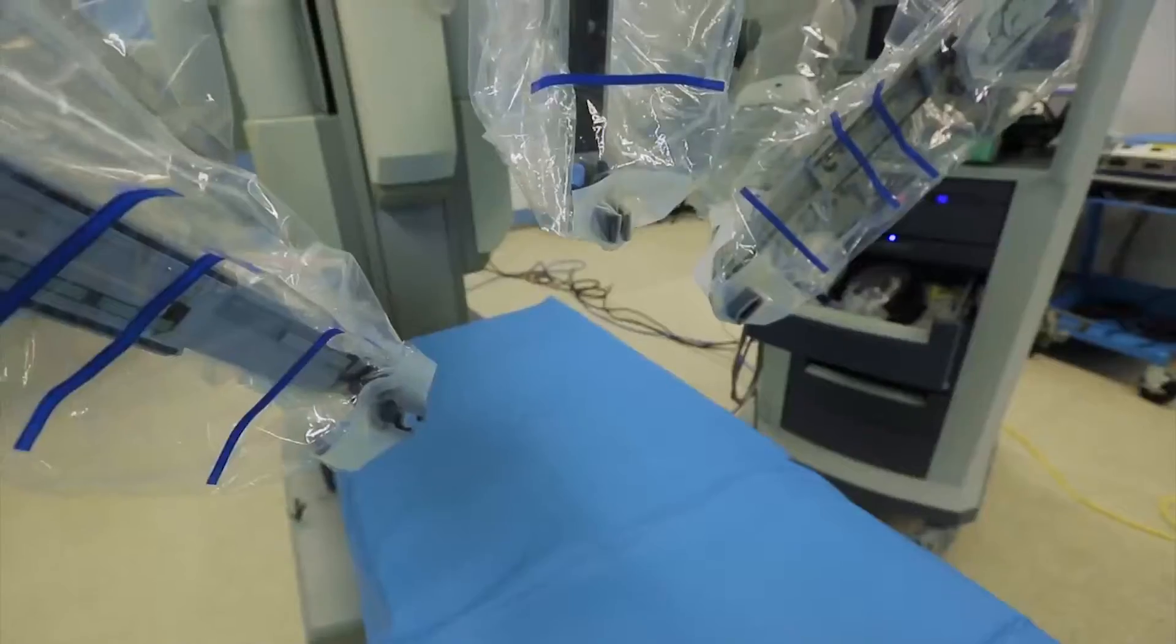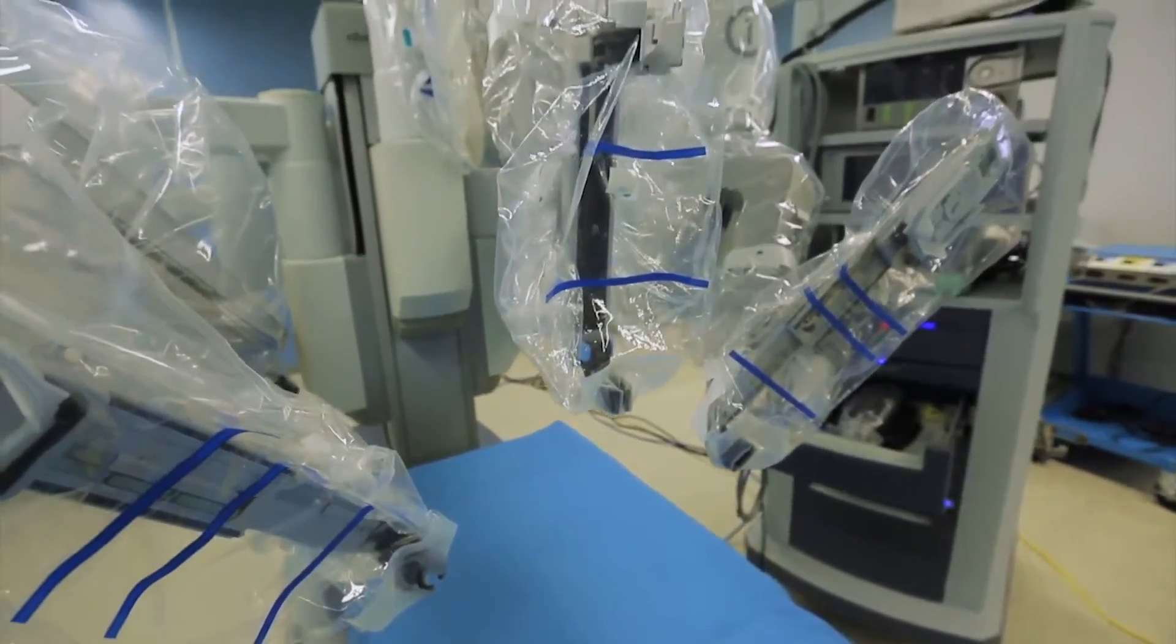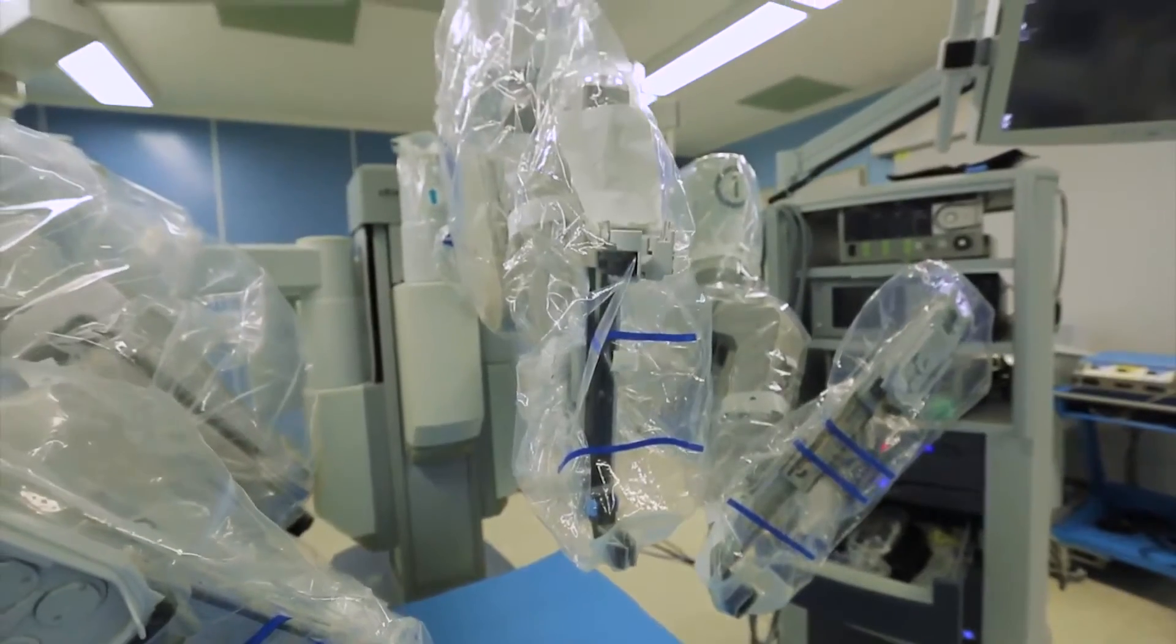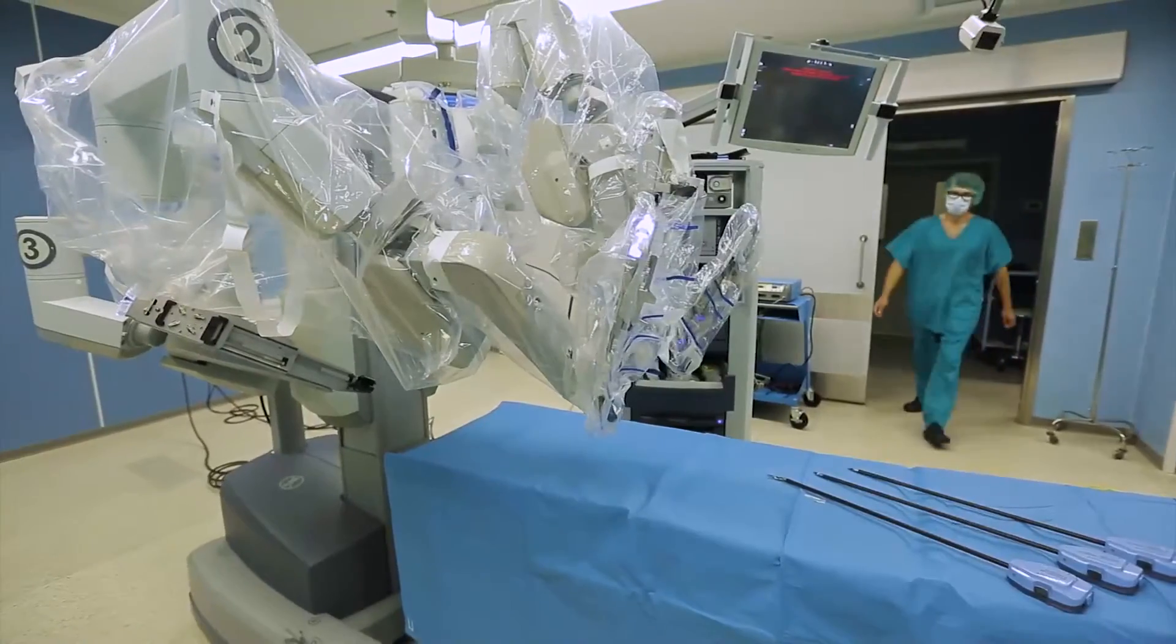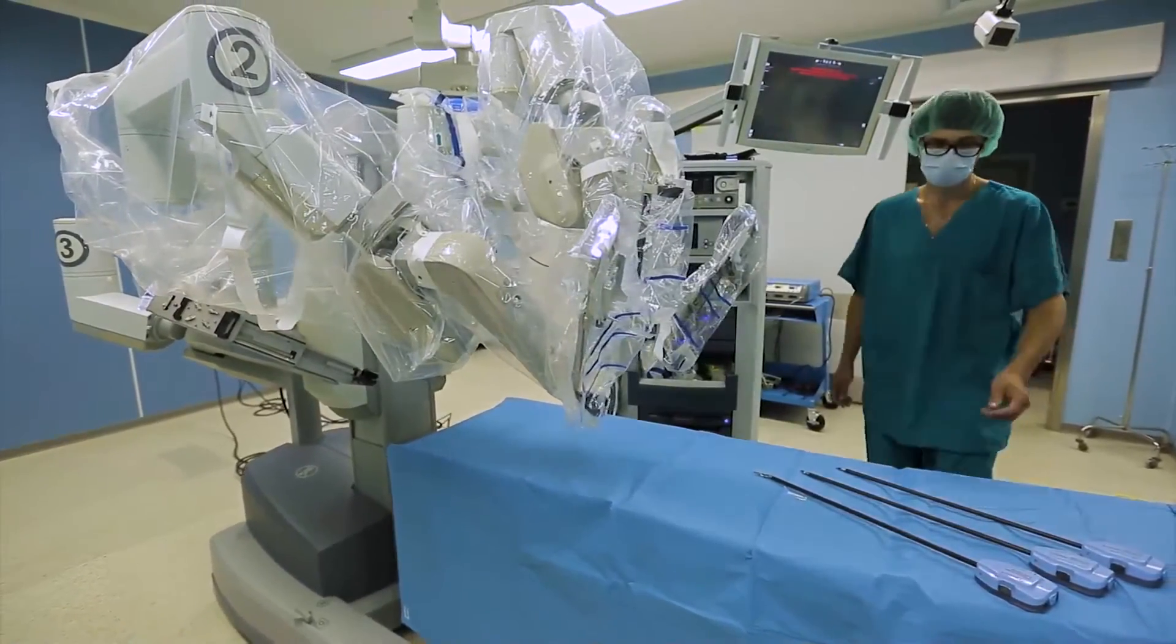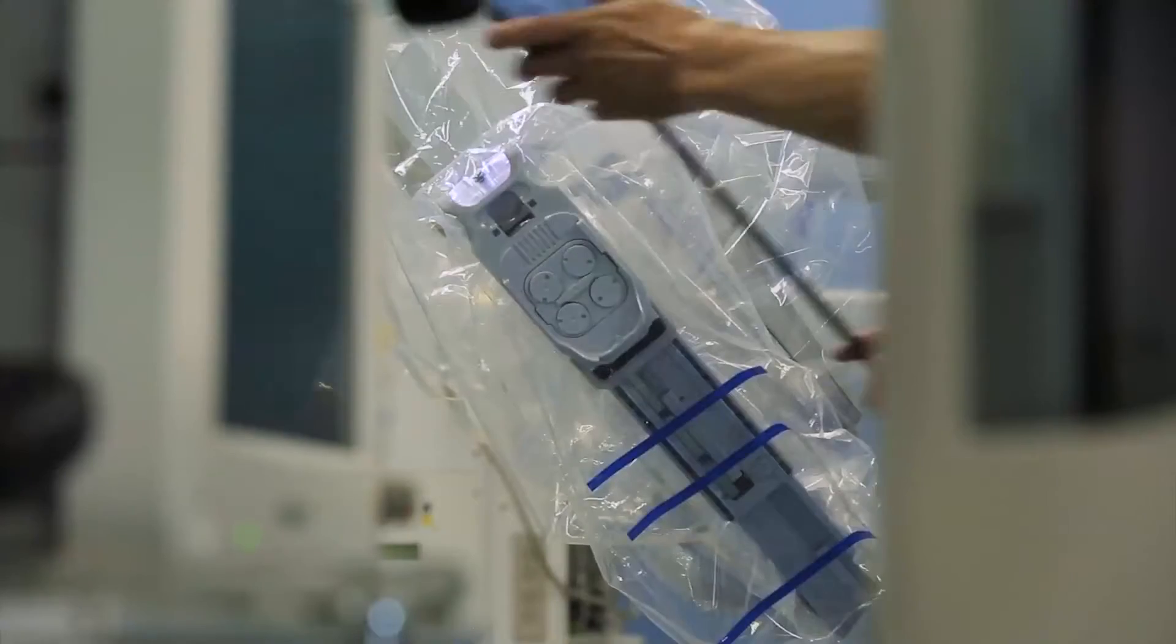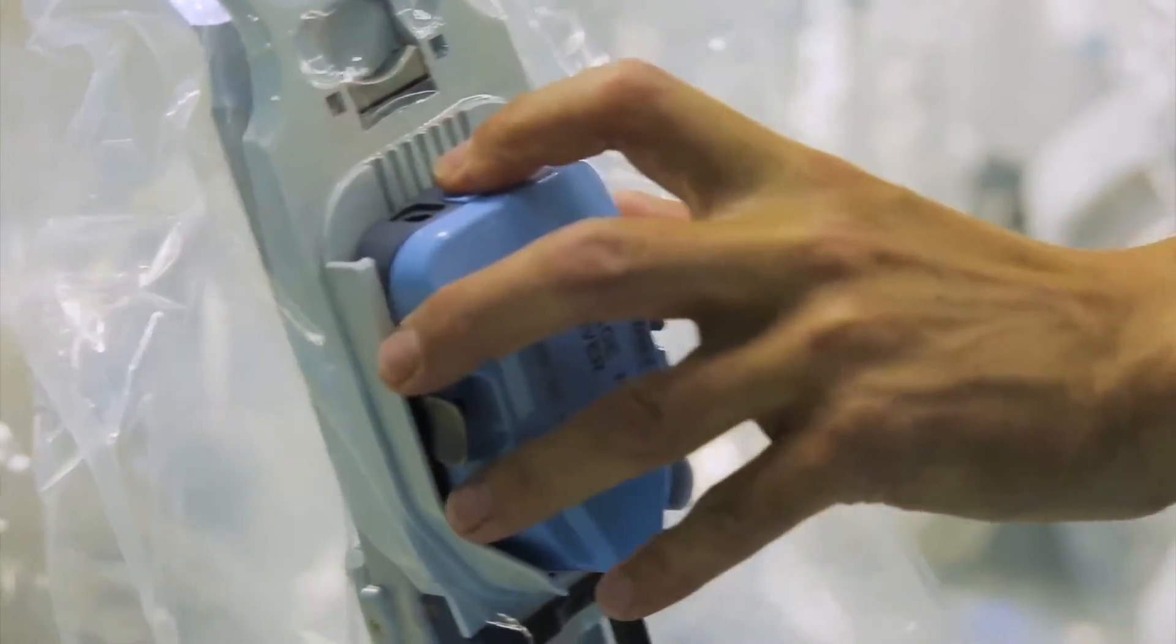It's called the Da Vinci, after the renowned Renaissance inventor. It is believed that Leonardo Da Vinci constructed the first anthropomorphic, that is similar to a human robot, which could move its arms and legs.